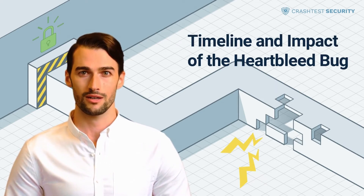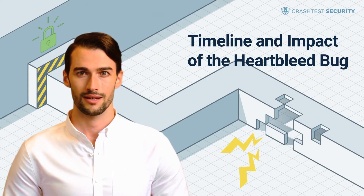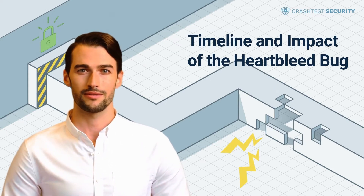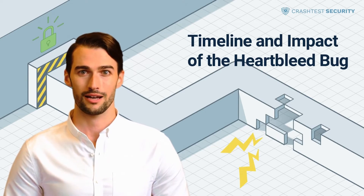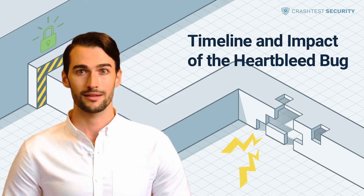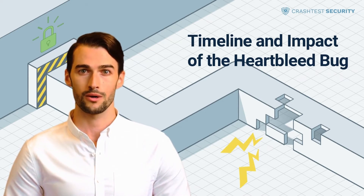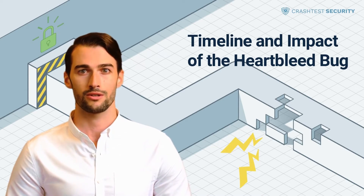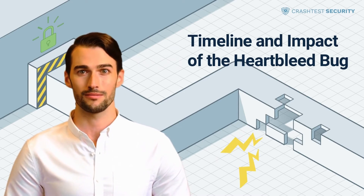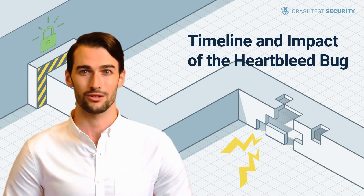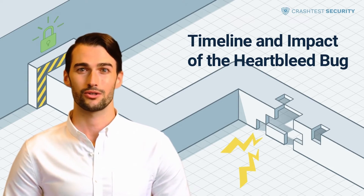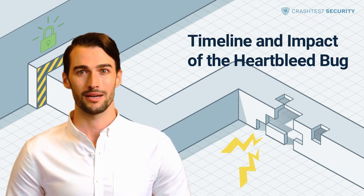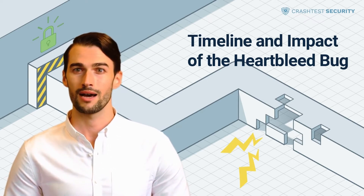The Heartbleed bug was brought to public awareness on April 7, 2014, the same day OpenSSL released a fixed version addressing the vulnerability. The vulnerability was identified independently by two parties: a Codenomicon Security Engineering team consisting of Riku, Antti, and Mahdi, and by Neil Mehta from Google Security, who reported it to the OpenSSL team. The Codenomicon team discovered the bug during efforts to boost the safeguard features of their Defensics security testing platform and reported it to the Finnish Transport and Communications Agency. An engineer from the Finnish cybersecurity company Synopsys Software Integrity Group named the bug Heartbleed and created a dedicated website to inform the public.